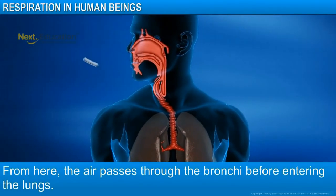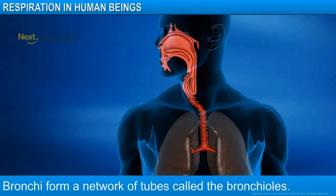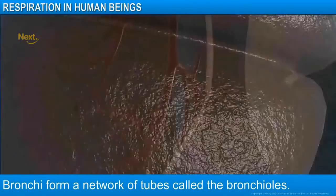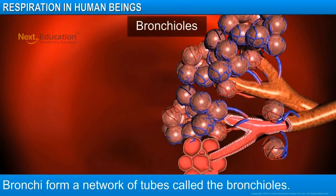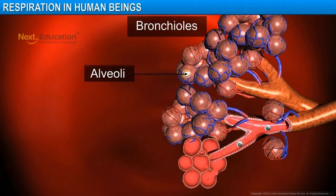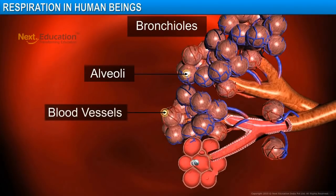From here, the air passes through the bronchi before entering the lungs. The bronchi are like a network of tubes that keep branching into smaller tubes called bronchioles. At the end of each bronchiole, you will find balloon-like structures called alveoli. The alveoli provide a surface for the exchange of oxygen and carbon dioxide. The walls of the alveoli contain a massive network of blood vessels.